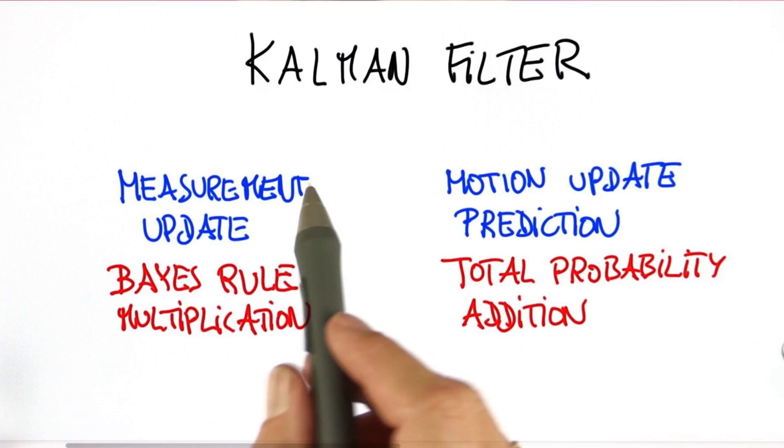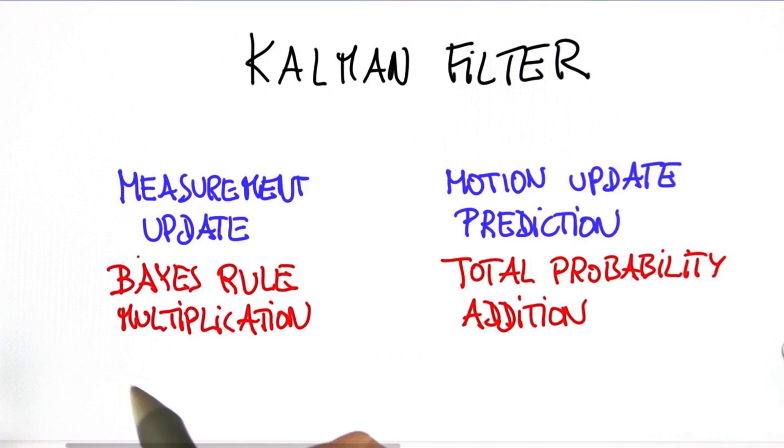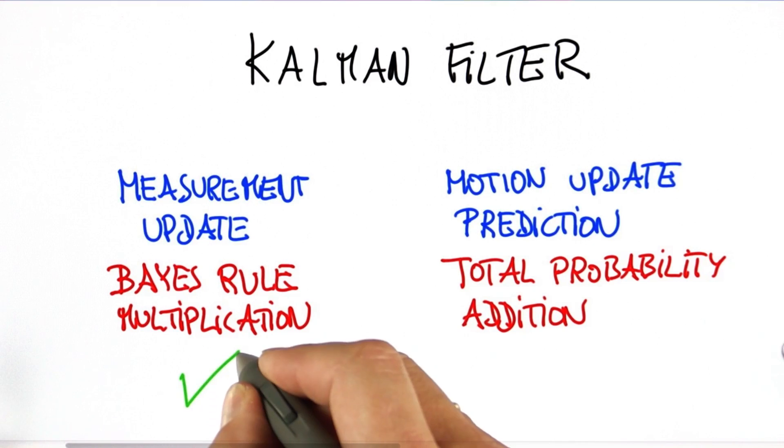So we tackled the more complicated case. This is actually the hard one mathematically. And we solved it, we gave an exact expression, we even derived it mathematically, and you were able to write a computer program that implements this step of the Kalman filter.